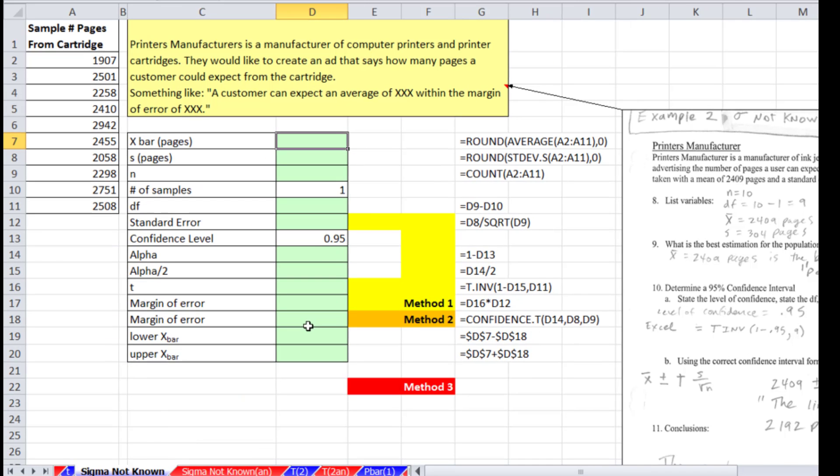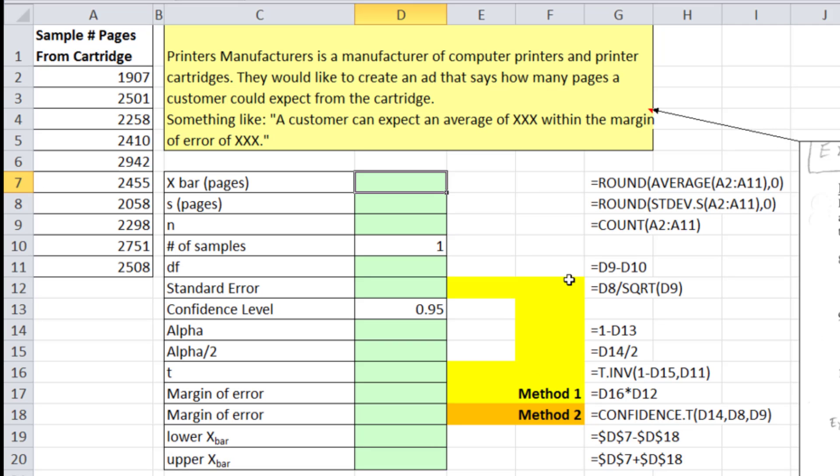All right, let's go over to the sheet sigma not known. Now this is our printer manufacturer example. And we're going to see all three methods here. Printer manufacturer is a manufacturer of computer printers and print cartridges. They would like to create an ad that says how many pages customer could expect from their cartridge. Something like a customer can expect an average with a margin of error. So now we're using a small sample here. The assumption for the t-distribution is that the population has to be bell-shaped or normal-shaped. And for something like pages coming off a printer cartridge or cereal boxes being filled or human weight, all those things have a bell-shaped normal distribution. So we'll assume the population is normally distributed. Now, because it is such a small sample size, that will affect which distribution we select. And the distribution, since the n and degrees of freedom is so small, will be more spread out.